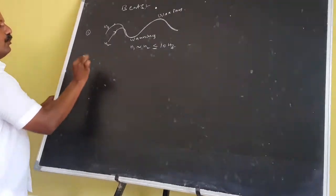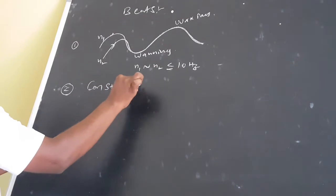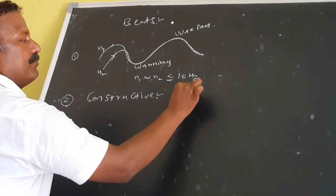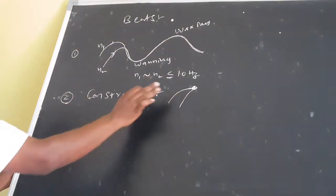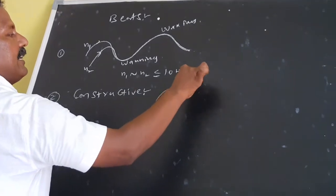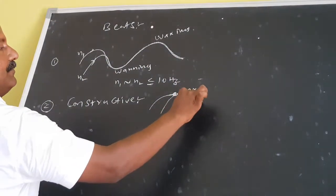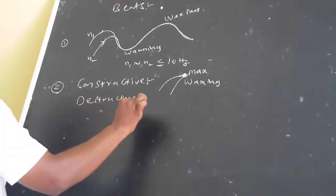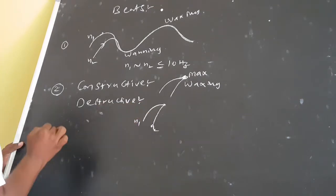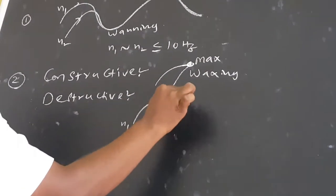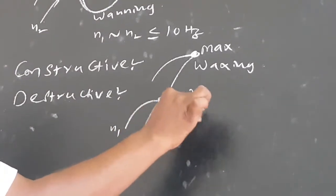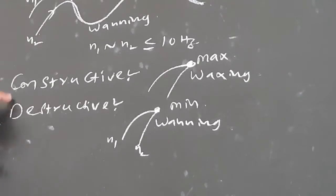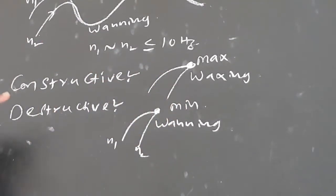Now let's discuss constructive and destructive interference. In constructive interference, two sound waves of the same phase interfere at one point and produce maximum intensity of sound — this is called waxing. In destructive interference, two sound waves of different frequencies interfere at one point and produce minimum intensity of sound — this is called waning.